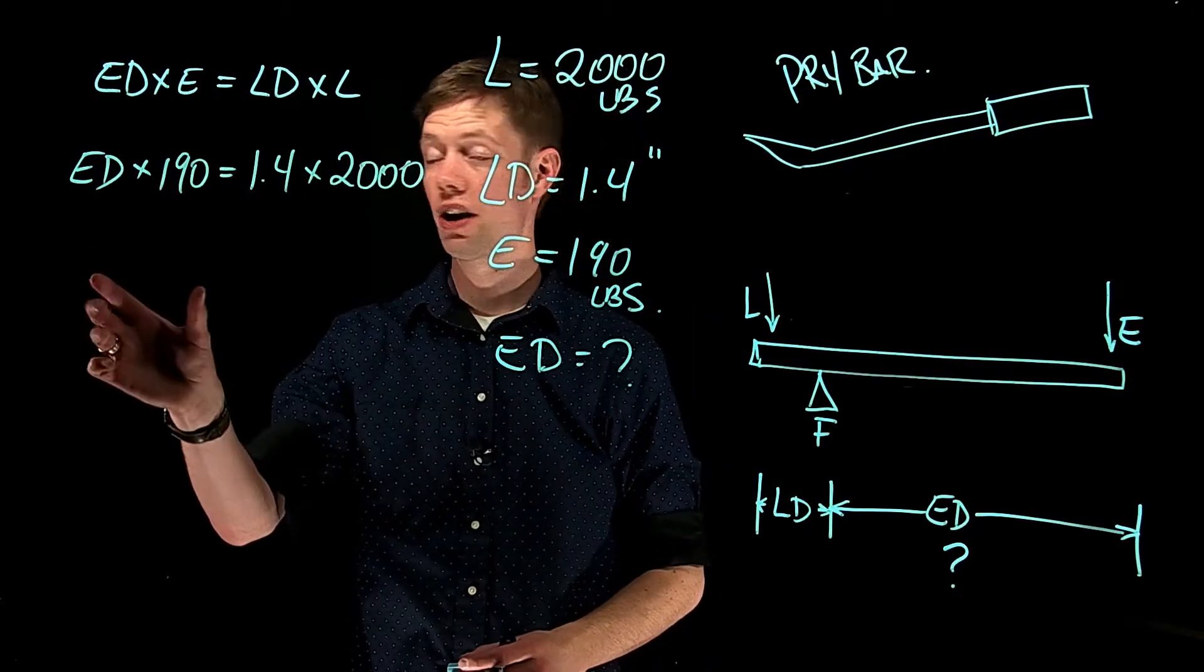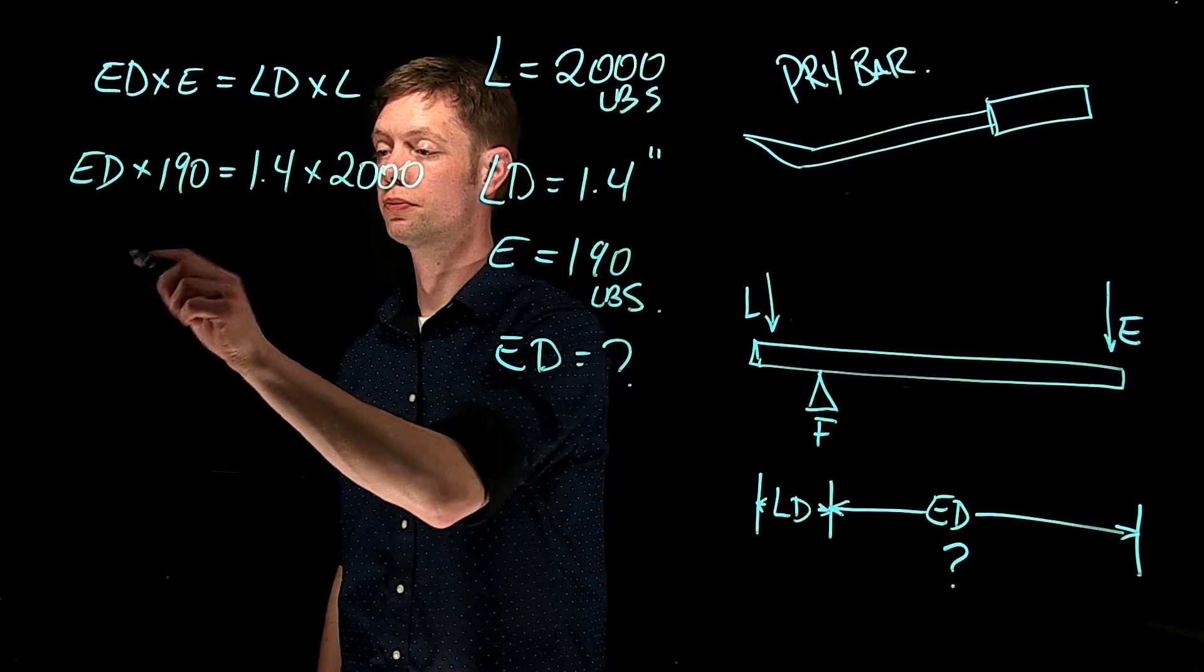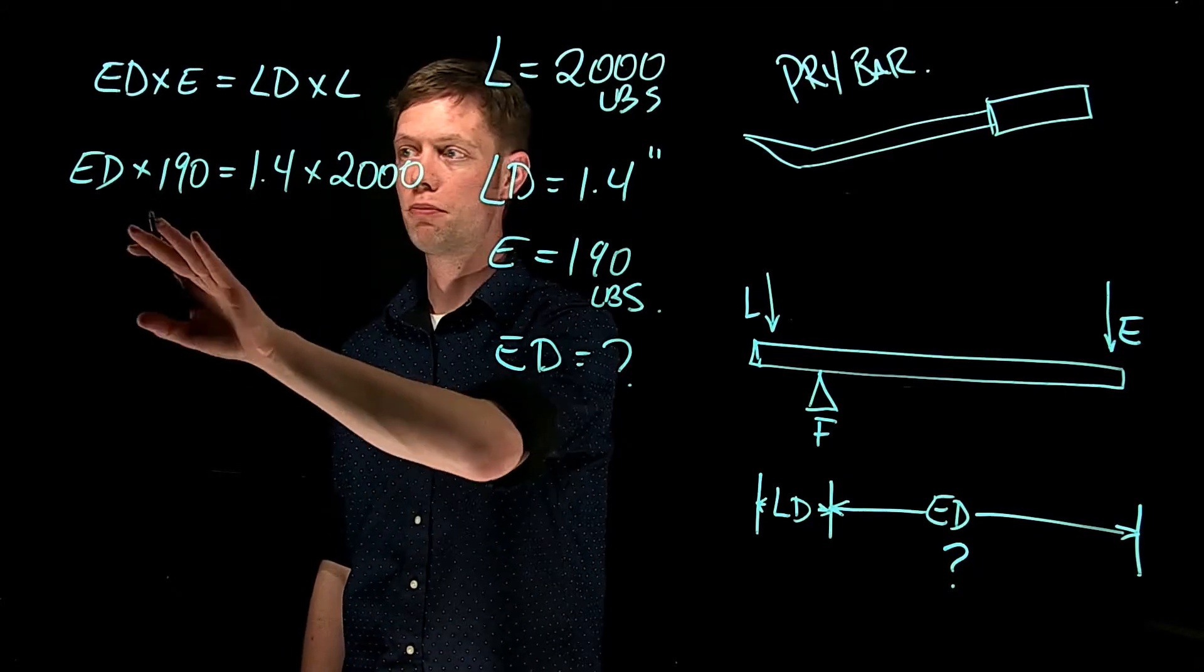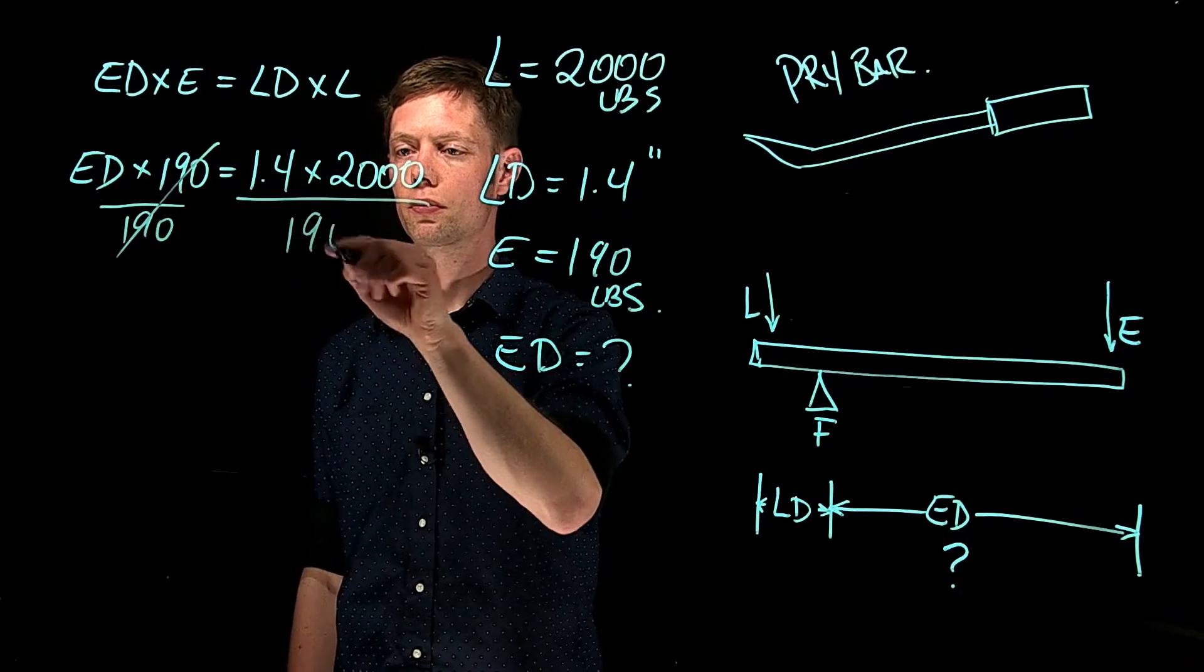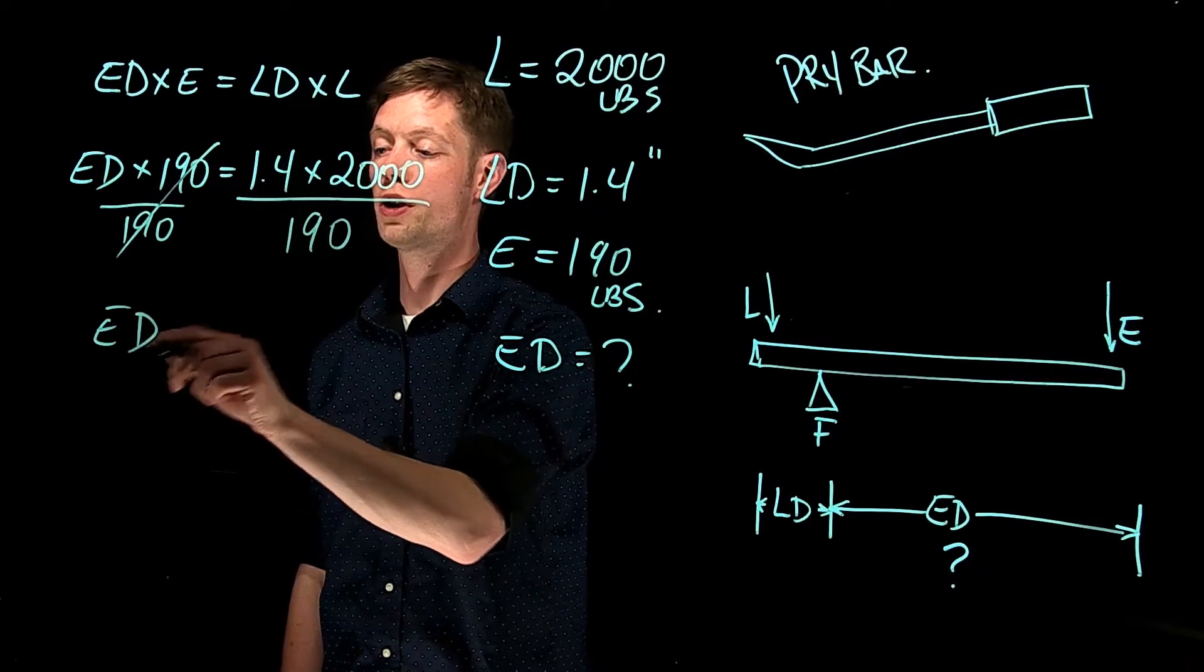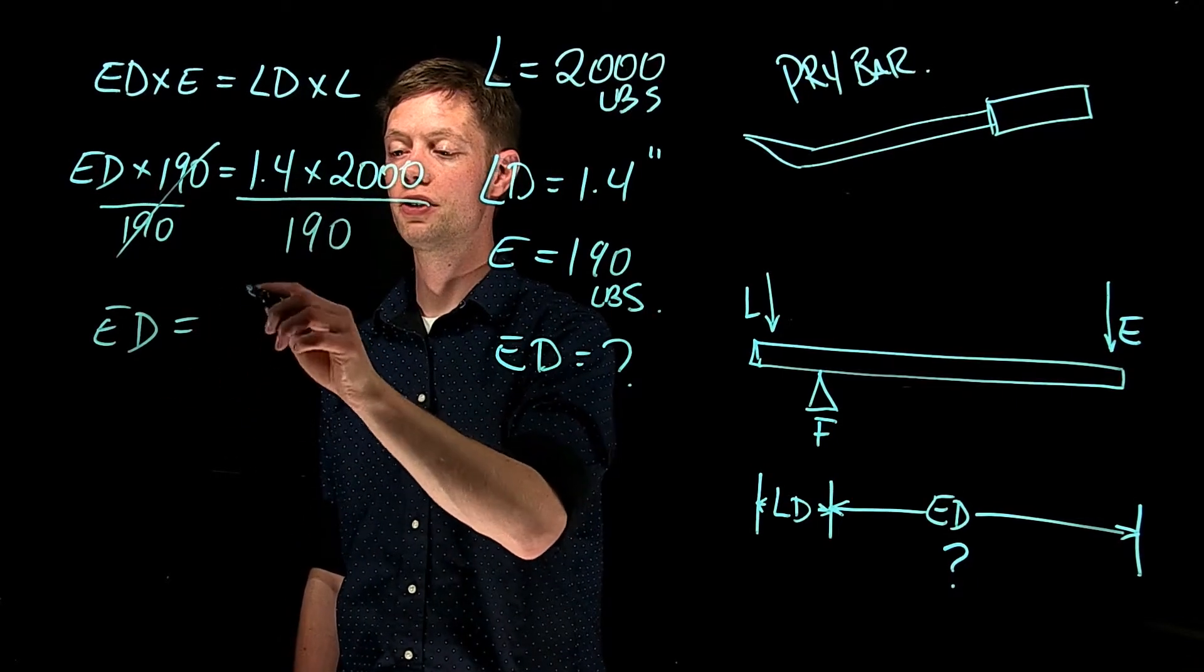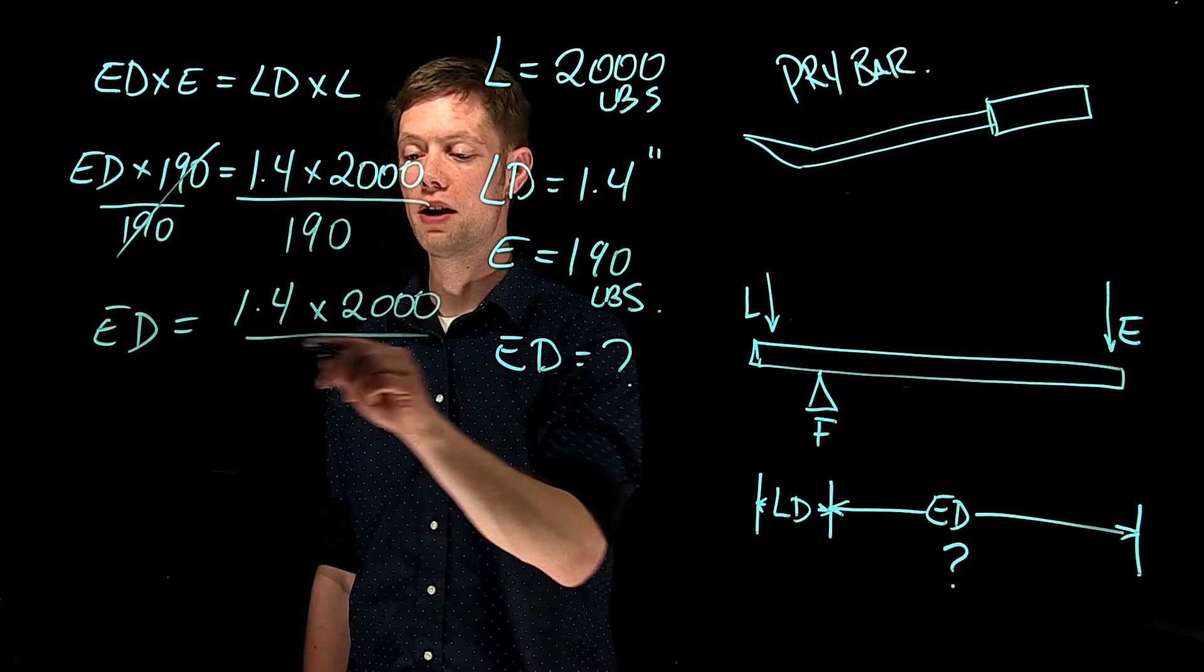I need to isolate our effort distance all by itself on this side of our equation. We can do that by dividing both sides by 190. That will cancel there and leave us with 190 on this side. We could rewrite that as effort distance is 1.4 times 2,000 divided by 190.